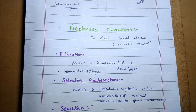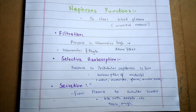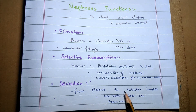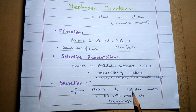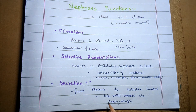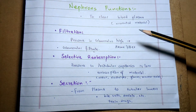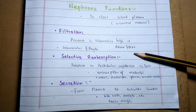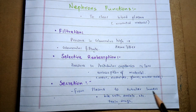The last step is secretion. Some substances are secreted from the plasma directly through the epithelial cells lining the tubules into the tubular lumen. For example, potassium ions, hydrogen ions, creatinine, and drug toxins are removed from the peritubular blood and secreted into the filtrate. These three steps make up the nephron's function, which are very important to the overall function of the kidney. So this is all about the nephron. Thank you very much.